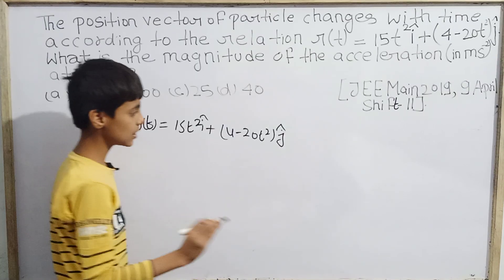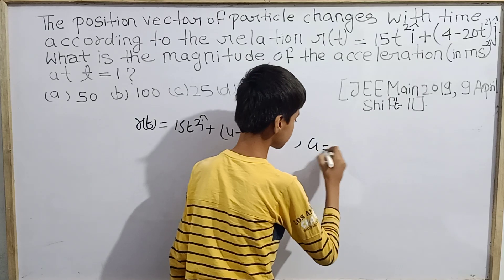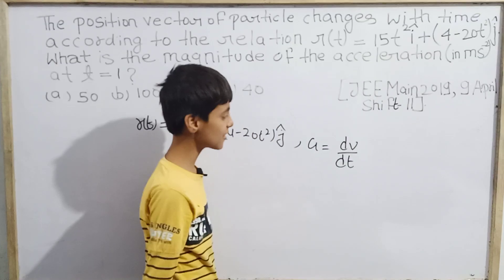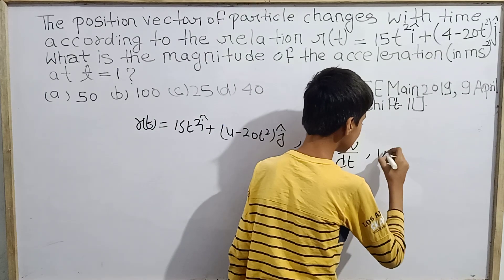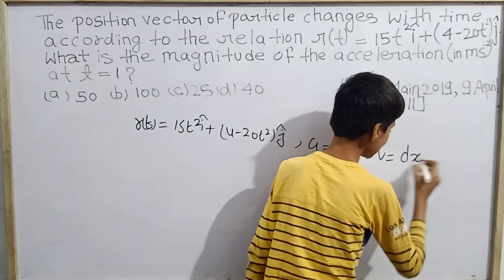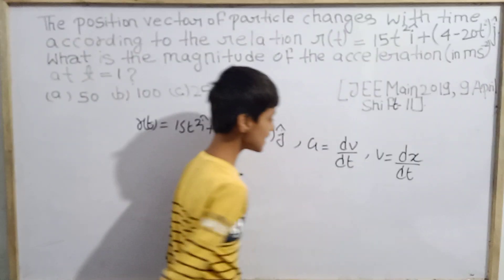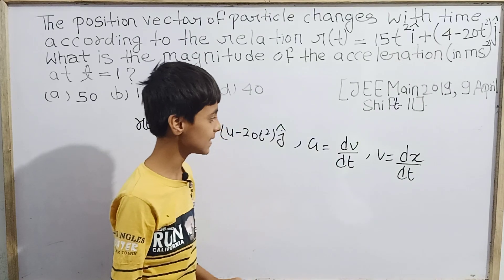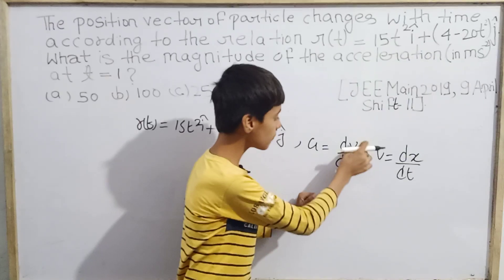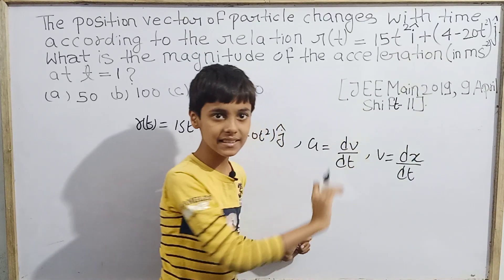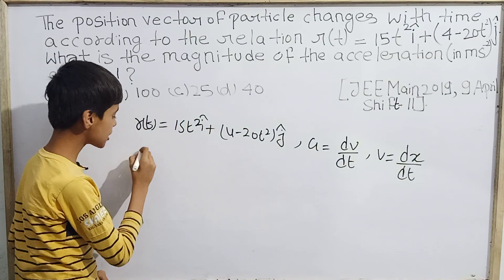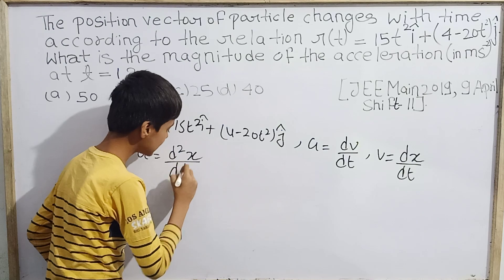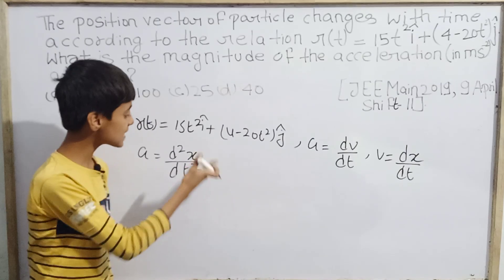What we'll be doing here is: since we know that acceleration is dv/dt, and velocity v = dx/dt, if we substitute v into the expression for acceleration, we get a = d²x/dt². This means we need to double-differentiate the position vector r with respect to time.